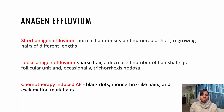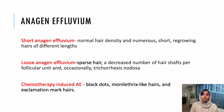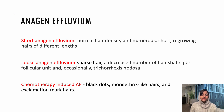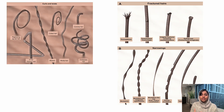Coming to anagen effluvium — there are three types: short anagen effluvium, loose anagen effluvium, and chemotherapy-induced anagen effluvium. In short anagen effluvium, there will be normal hair density with short regrowing hairs of different lengths. In loose anagen effluvium, there will be sparse hair and decreased number of hair shafts per follicular unit; occasionally you can see trichorrhexis nodosa. In chemotherapy-induced anagen effluvium, there are more black dots, monilethrix-like hairs, and exclamation mark hairs.